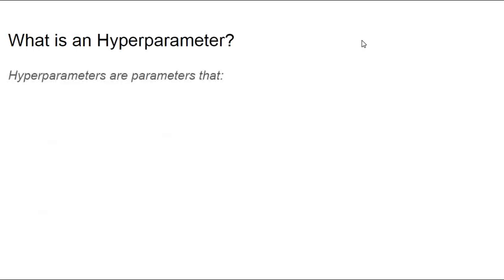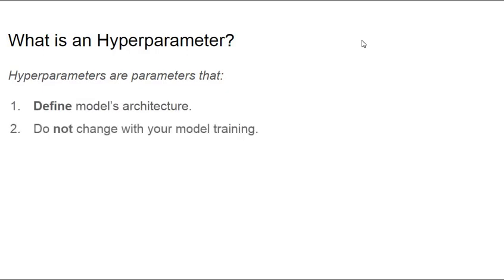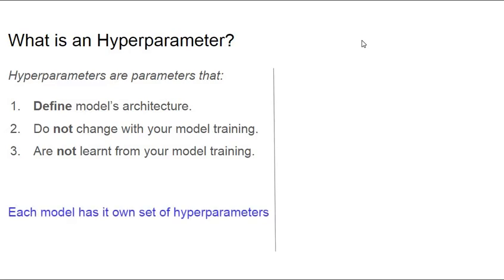What is a hyperparameter? Hyperparameters are parameters of a model that define the model's architecture, that do not change with model training, and are not learned as part of training. Those are the three important attributes that define what hyperparameters are. Another important thing to note is that hyperparameters are different for each model — each model has its own set of hyperparameters.